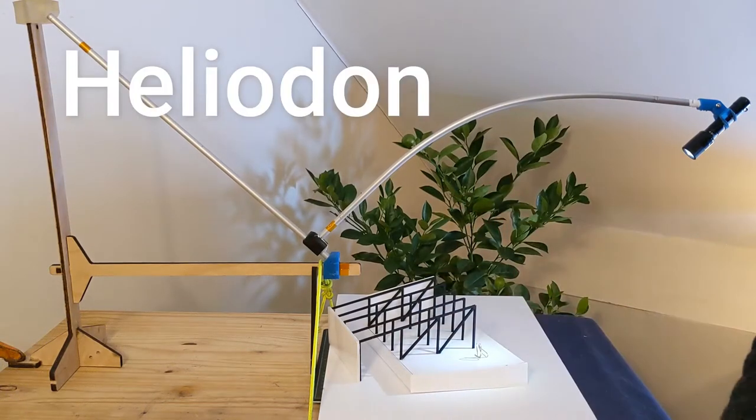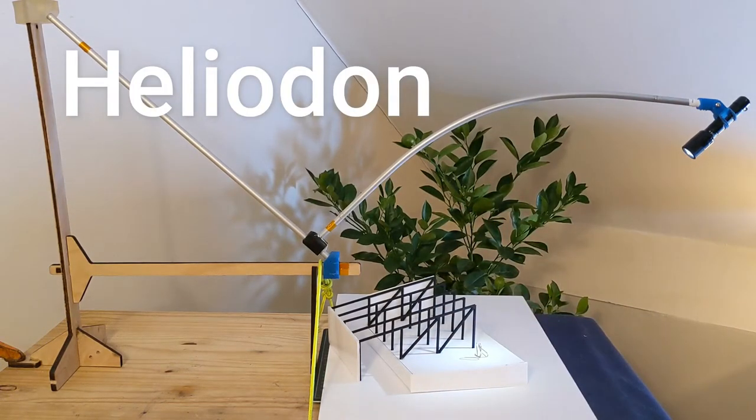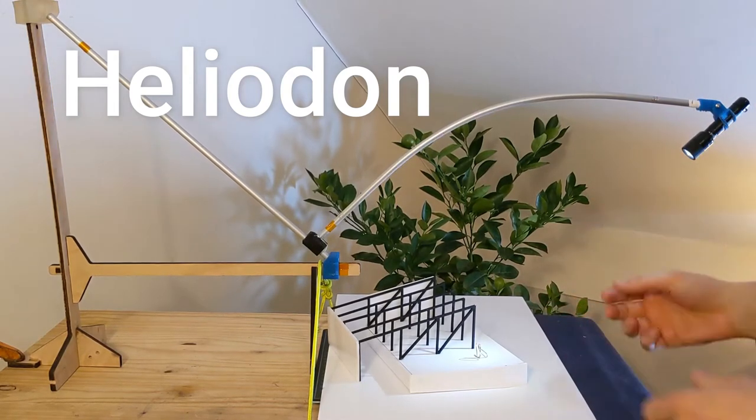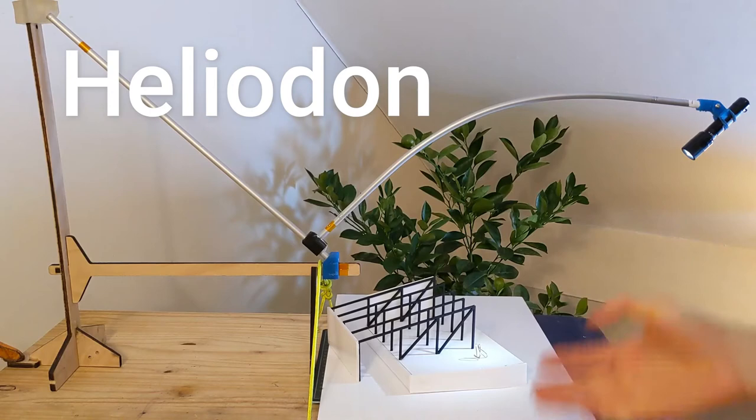This is a heliodon. A heliodon is an architectural tool that can simulate the position of the sun in the sky. There's three factors that determine the solar position.